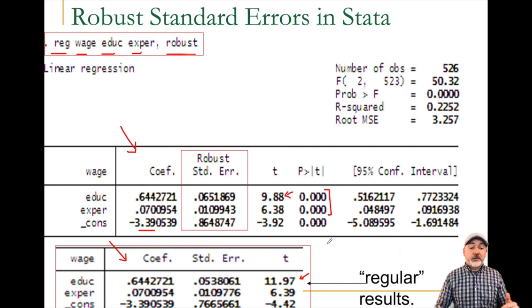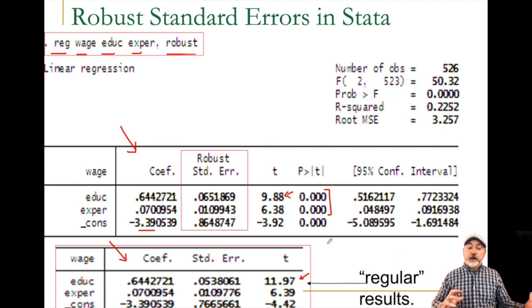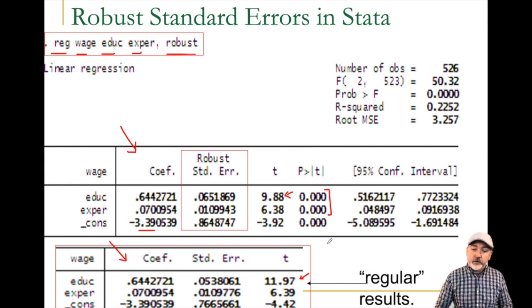Those are the three options for correcting for a heteroscedastic error. Hopefully you can go through that, make sense of it, see how to apply it. Thank you very much for your time.